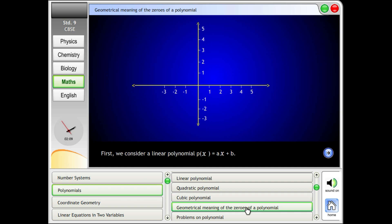Zeroes of a polynomial. First, we consider a linear polynomial p(x) = ax + b. The graph of a linear polynomial is always a straight line. It may or may not pass through the x-axis.